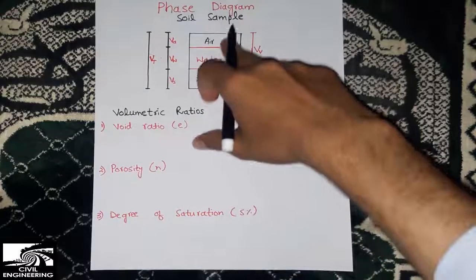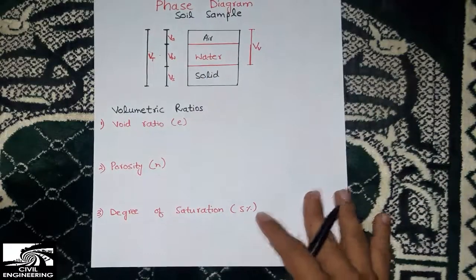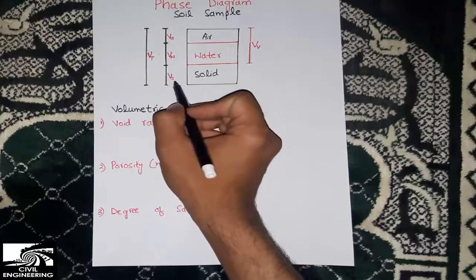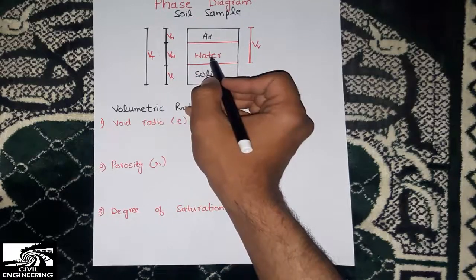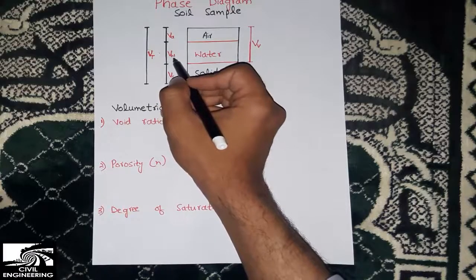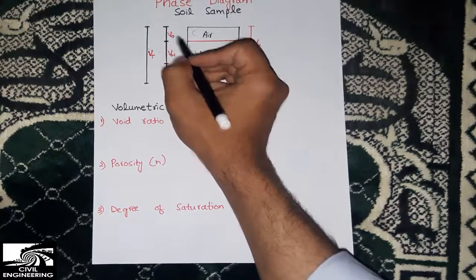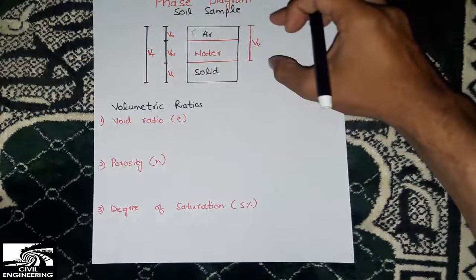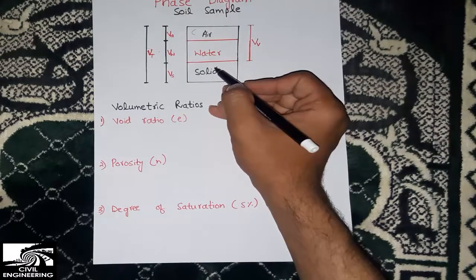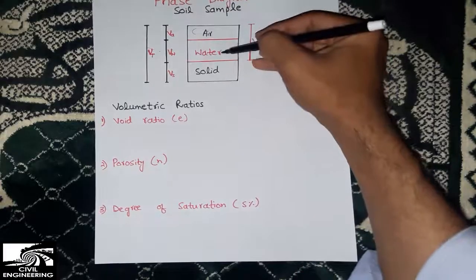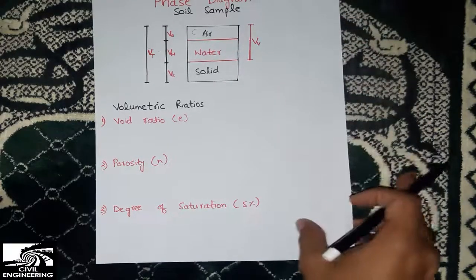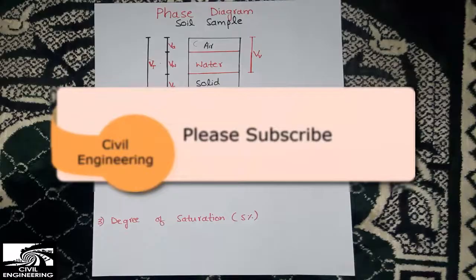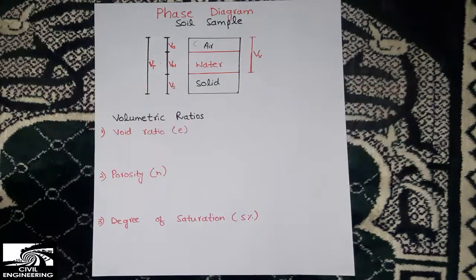In the phase diagram, the volume of the solid mass of the soil is represented by Vs, the volume of the water portion is represented by Vw, and the volume of the air is represented by Va. The total volume of the soil sample is represented by Vt, while the volume of the voids — which includes both air and water without the presence of solids — is represented by Vv, the volume of the voids.